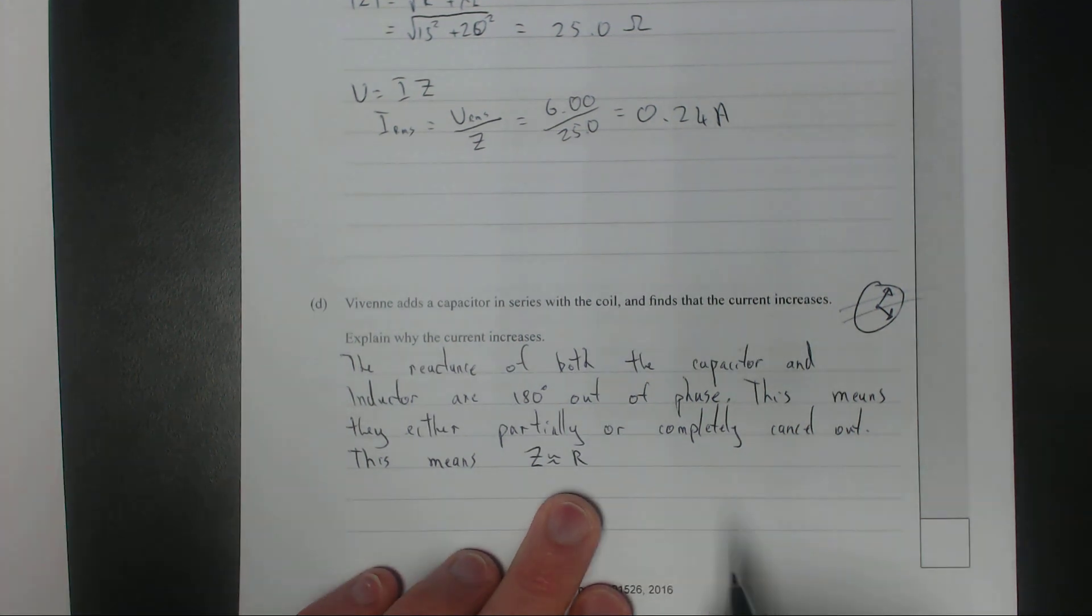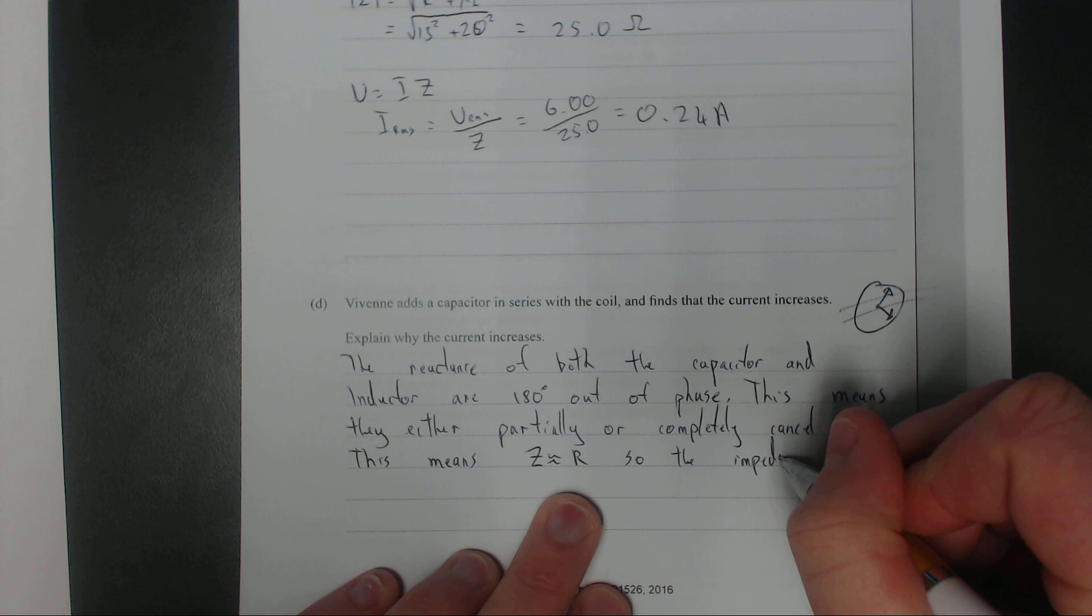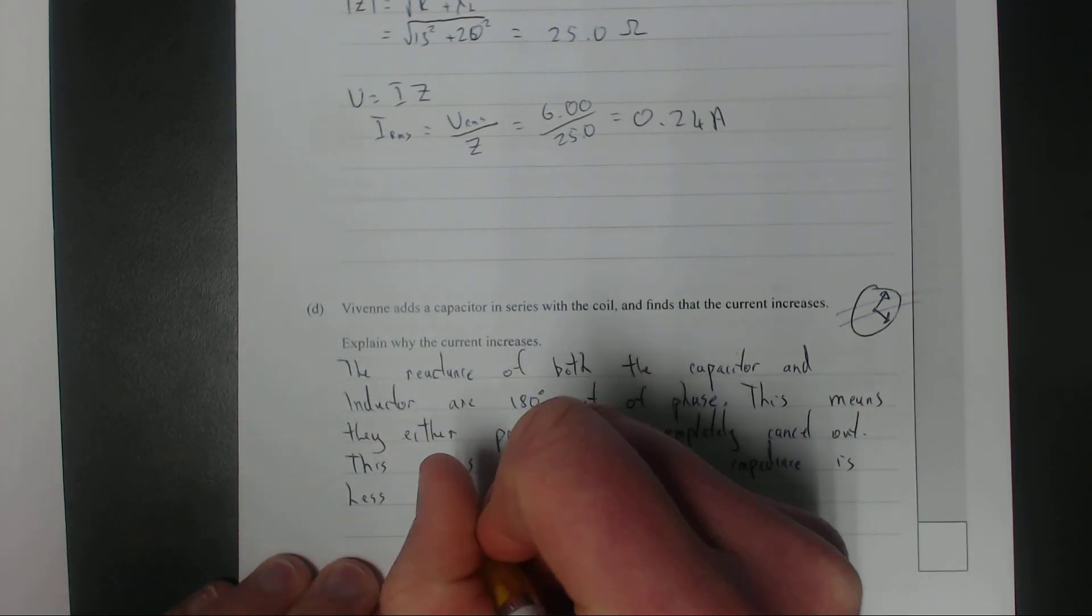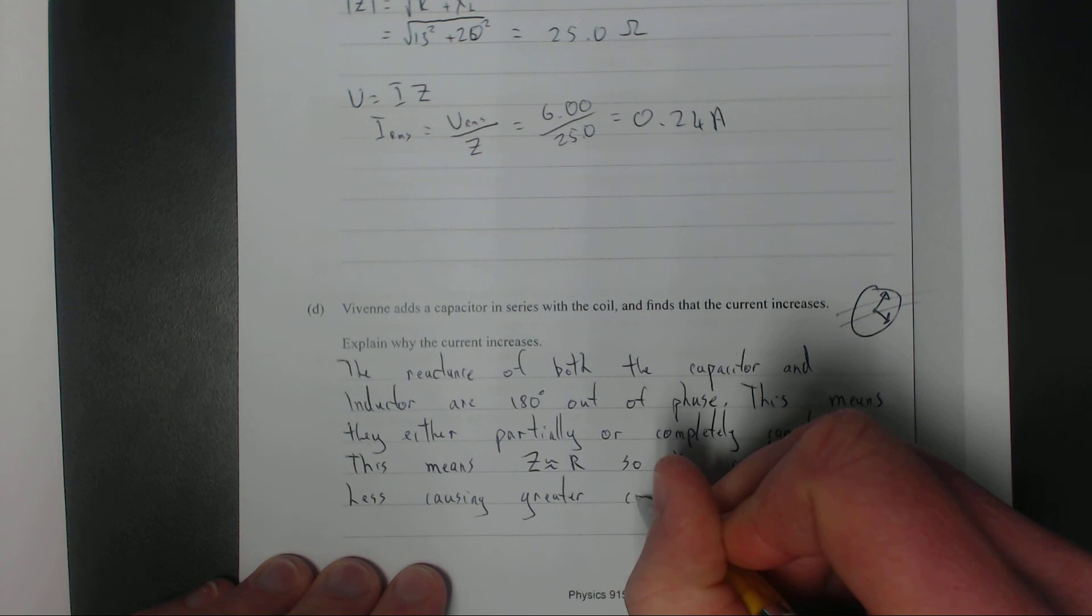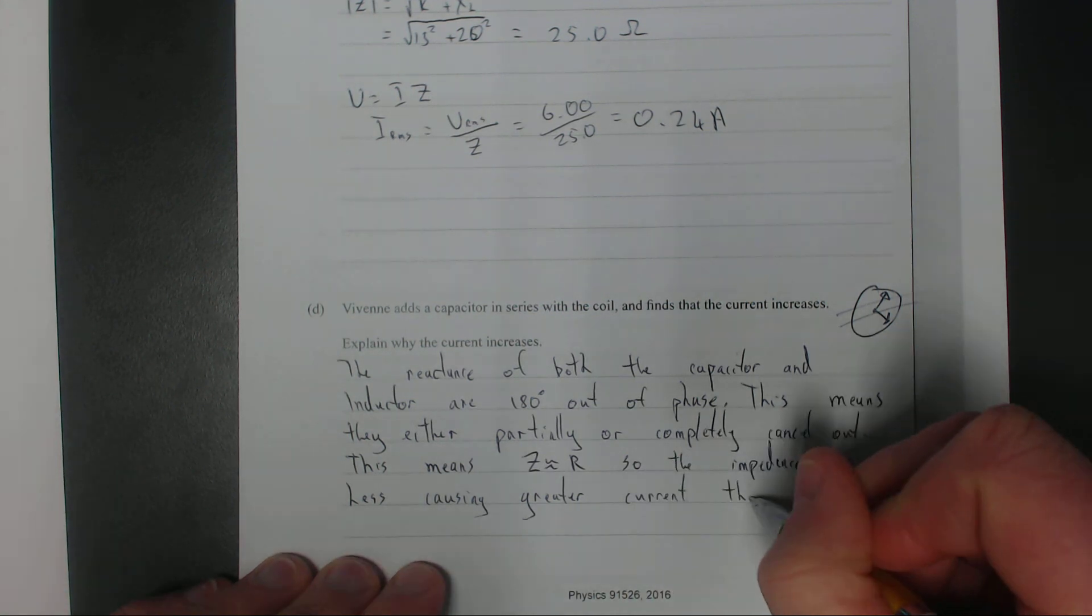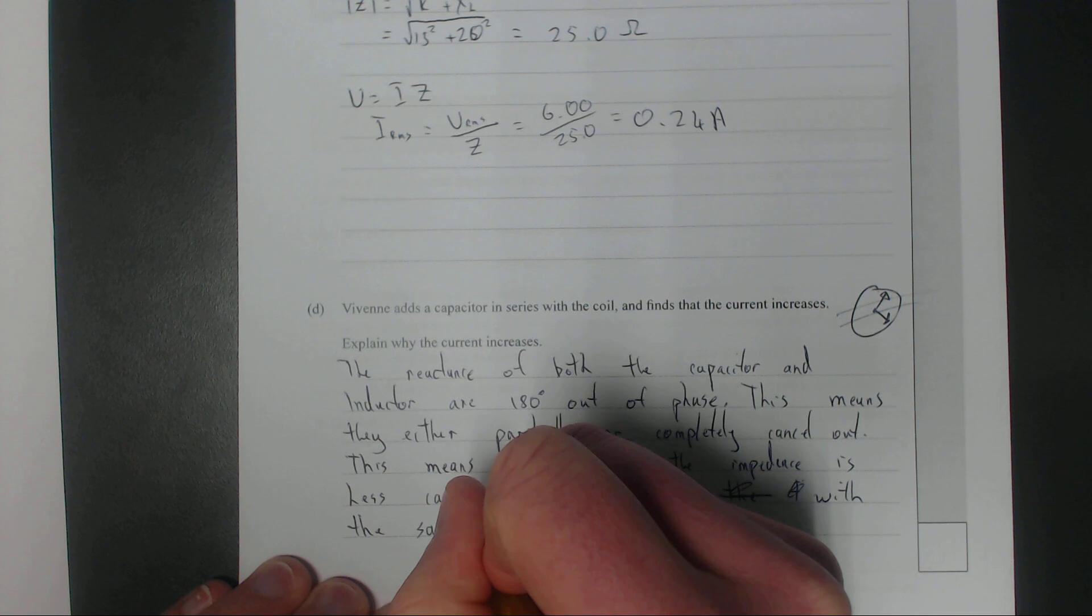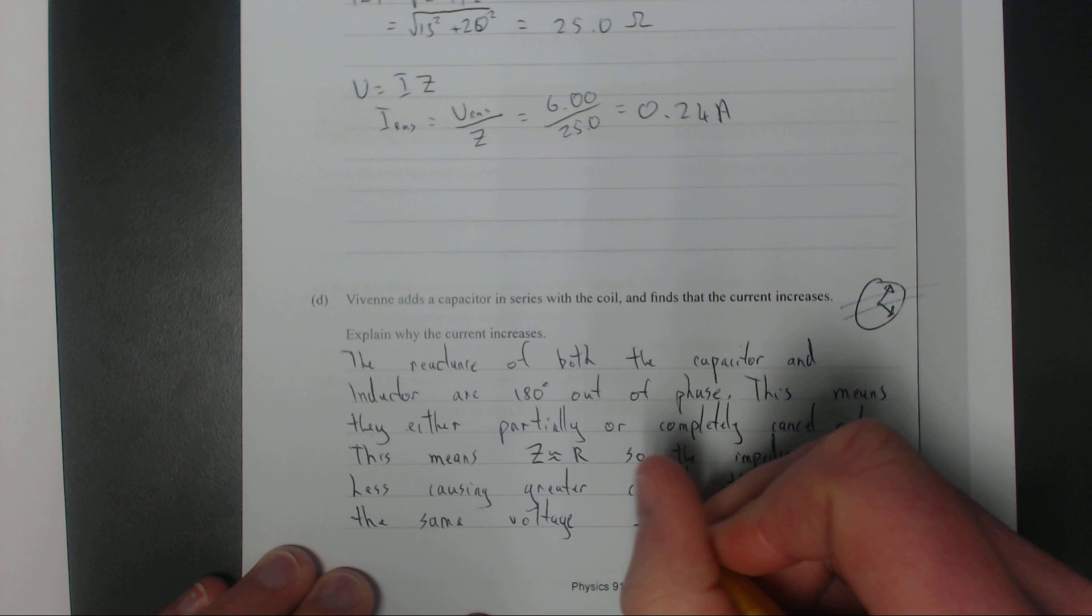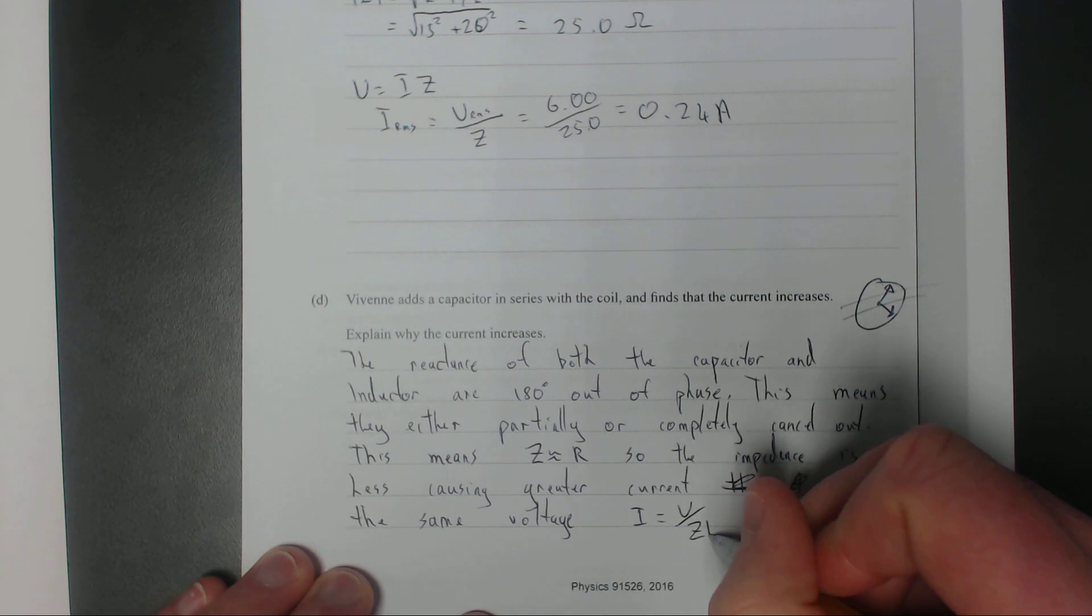So the impedance is less, causing greater current with the same voltage. As I equals V over Z, so Z goes down, I goes up. There we go.